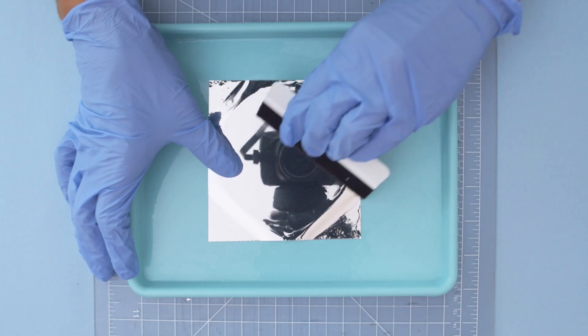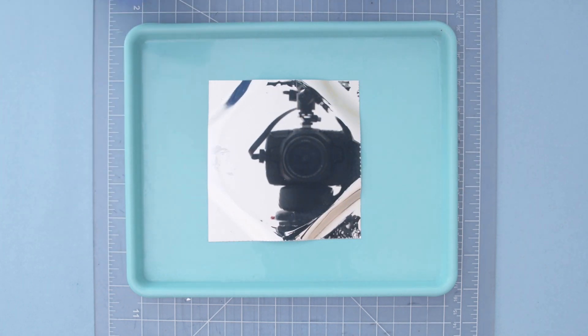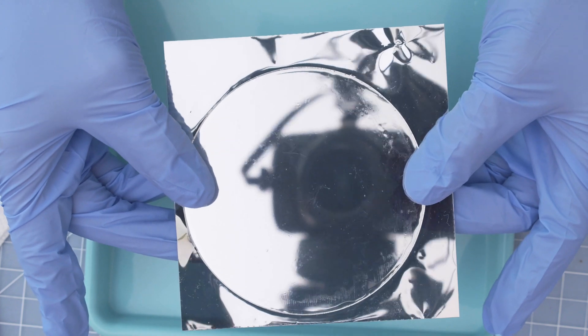I proceeded to squeegee the film until all of the soapy water has either been wiped away or dried out. Once both sides look good I let the film dry for a few minutes before trimming the excess.